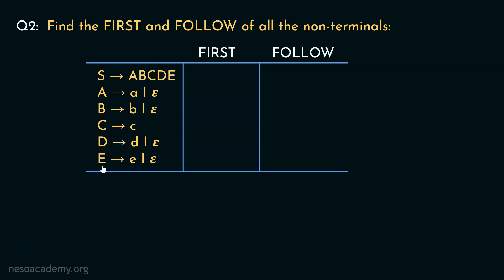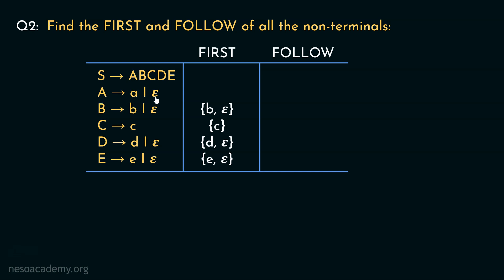E's production rule states that E can be rewritten as lowercase e or Epsilon. Therefore, the first of E is going to include the symbols e and Epsilon. Thereafter, D can be rewritten as d or Epsilon. Therefore, the first of D will include the symbols d and Epsilon. Coming to C, it can only be rewritten as lowercase c. Therefore, the first of C will include only c. Similar to D and E, the first of B will include the symbols b and Epsilon. And for A, since A can be rewritten as a or Epsilon, the first of A will include the symbols a and Epsilon.